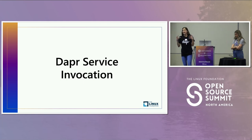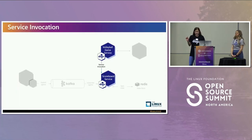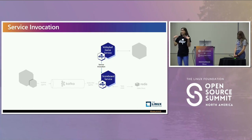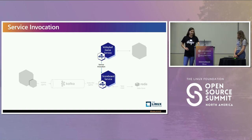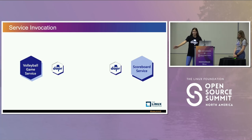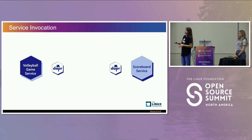Now we'll hone in on the DAPR building block for service invocation. These are the two main services I'll be talking about — the volleyball game service, where you specify a game ID, and it makes a POST request to our scoreboard service saying 'give me game information for game ID one.' There's actually quite a bit going on under the hood that's totally abstracted away from you, thanks to DAPR. One of the key components of DAPR and service invocation in particular are app identities, or app IDs for short.